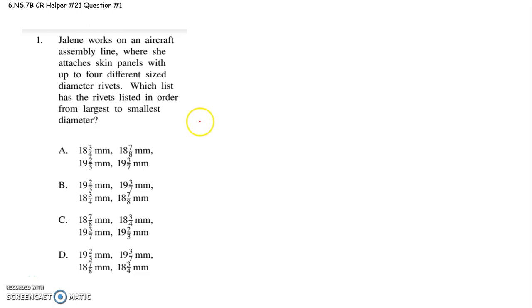It says Jaylene works on an aircraft assembly line where she attaches skin panels with up to four different size diameter rivets. Which list has the rivets listed in order from largest to smallest diameter? Okay, lots of words, but these are just fractions or mixed numbers that we're trying to put in order from largest to smallest.